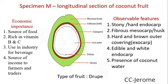Specimen M, longitudinal section of a coconut fruit. Economic importance: source of food, rich in vitamins, used in industry for oil making, it's a source of income to farmers and traders. Observable features: hard endocarp, fibrous mesocarp, hard and green outer covering that is the exocarp, also called epicarp. They have edible white flesh inside the endocarp, and there is presence of coconut water. The type of fruit is a drupe.